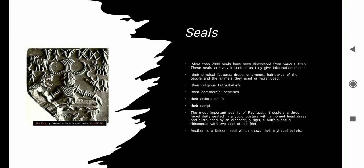Most of the seals were either square or rectangular in shape and were made of terracotta and steatite. Few important seals were the Pashupati seal and the Unicorn seal.